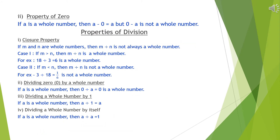Second, property of zero in subtraction. If a is a whole number, then a minus 0 equals a, which is a whole number. But 0 minus a equals minus a, which is not a whole number.